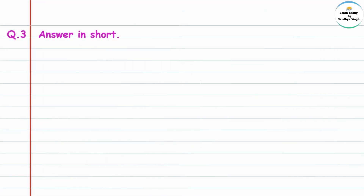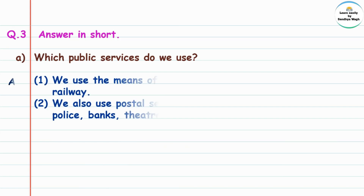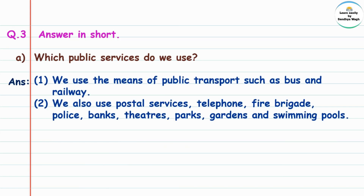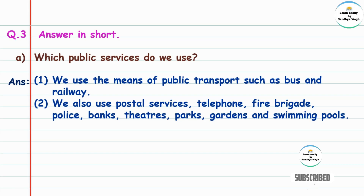Question three: answer in short. (a) Which public services do we use? Answer: We use the means of public transport such as bus and railway. We also use postal services, telephone, fire brigade, police, banks, theaters, parks, gardens, and swimming pools.